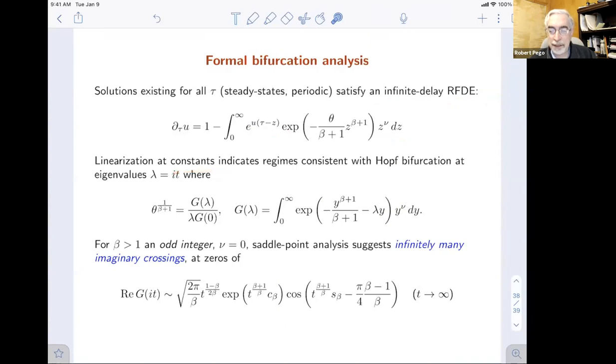When you linearize around constants, we get a dispersion relation. We need eigenvalues to be pure imaginary in an equation like this. It's going to be a Fourier transform of an exponential density like this. We can do a saddle point analysis. That's one of the more fun points of the analysis. Do this saddle point analysis and find out when beta is odd, an odd integer, there appear to be an infinite number of zeros of the real part of this numerator, which is what you need to satisfy. There appear to be an infinite number of bifurcations for odd values of beta when the parameter nu is zero. With that, I'm going to switch over to a desktop where you can see this.